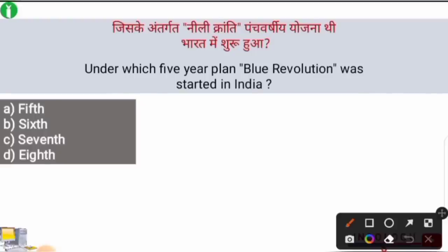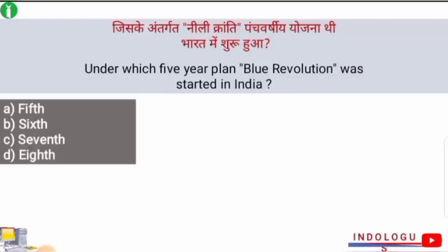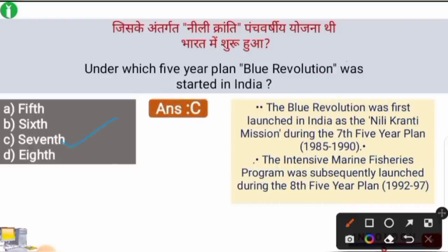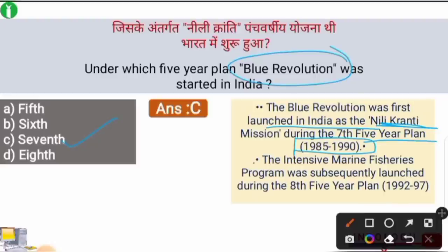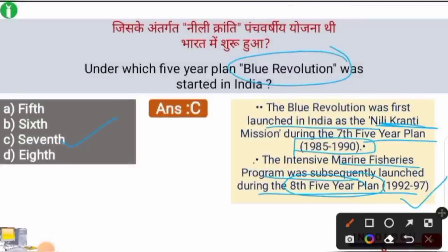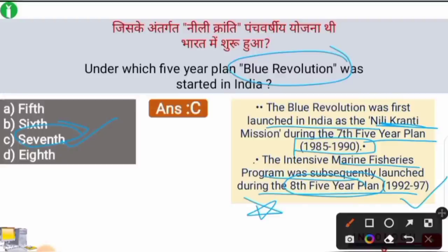Next question: Under which Five Year Plan was the Blue Revolution started in India? The right answer is option C — the Seventh Five Year Plan. The Blue Revolution's objective was to support the marine industry. It was first launched in India as the 'Neeli Kranti' Mission during the Seventh Five Year Plan, whose duration was 1985 to 1990. The intensive marine fisheries program was subsequently launched during the Eighth Five Year Plan, with a duration of 1992 to 1997.